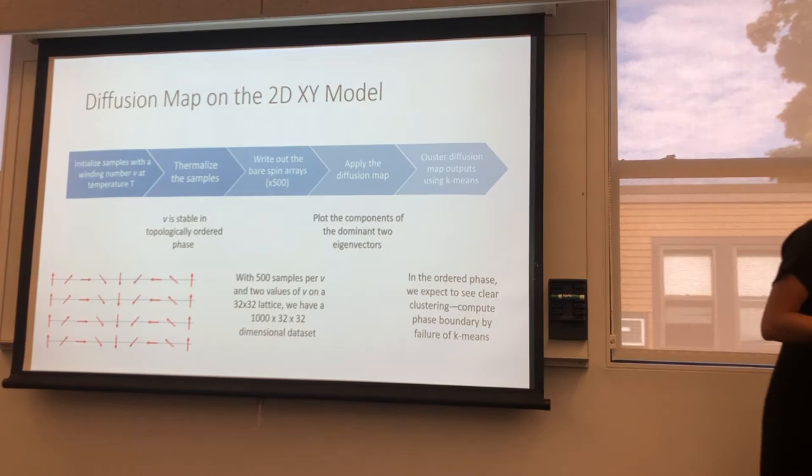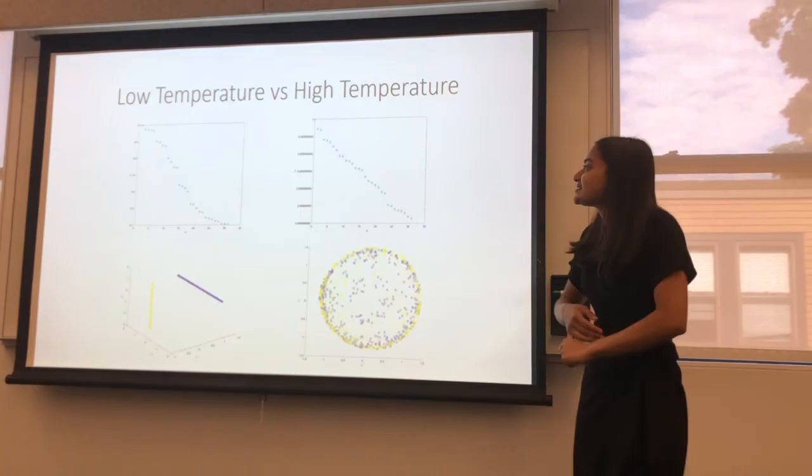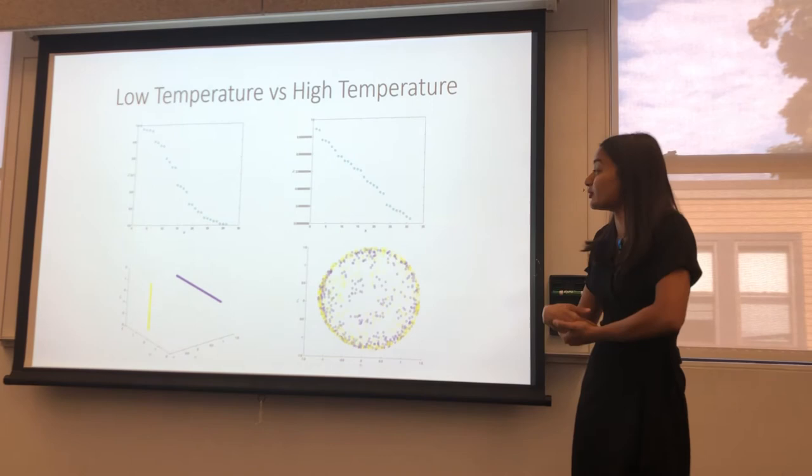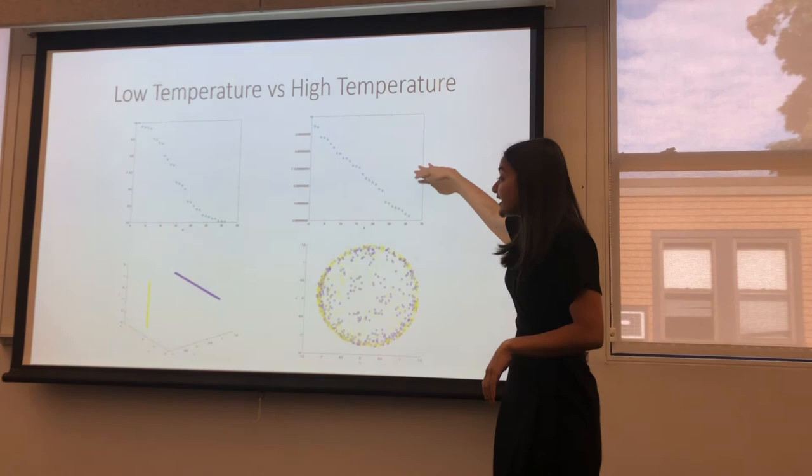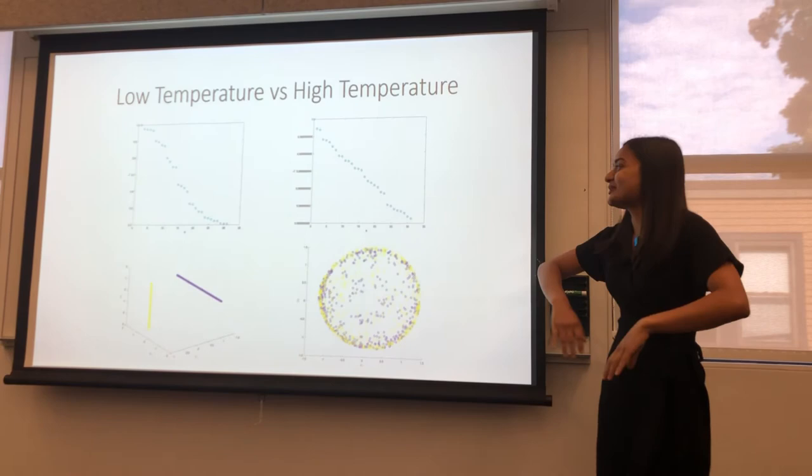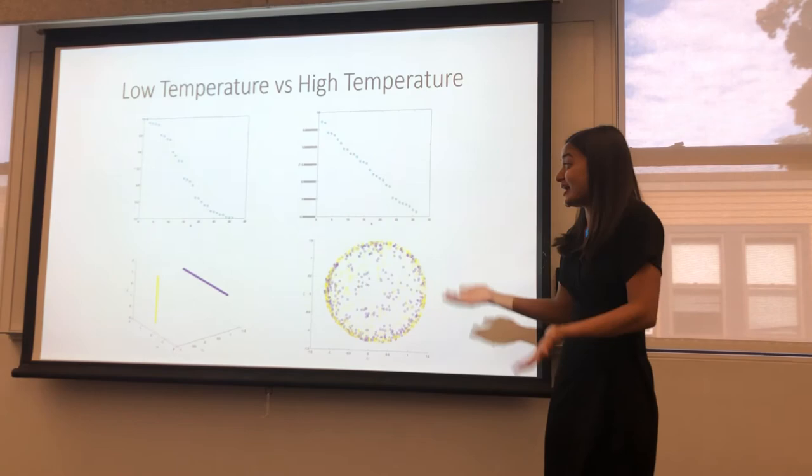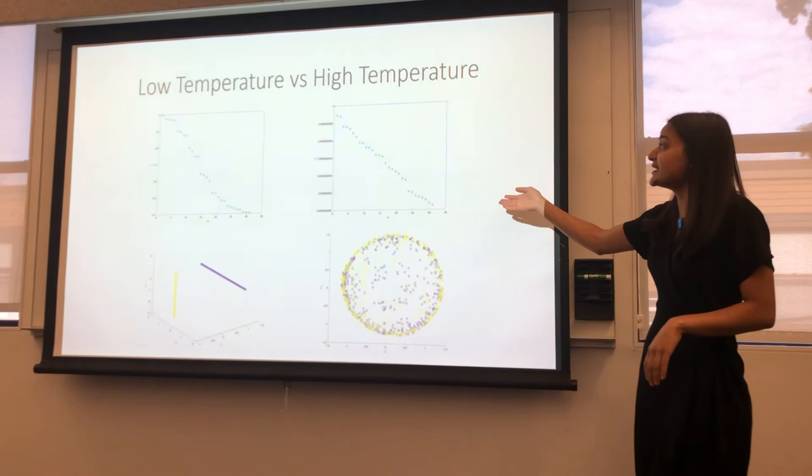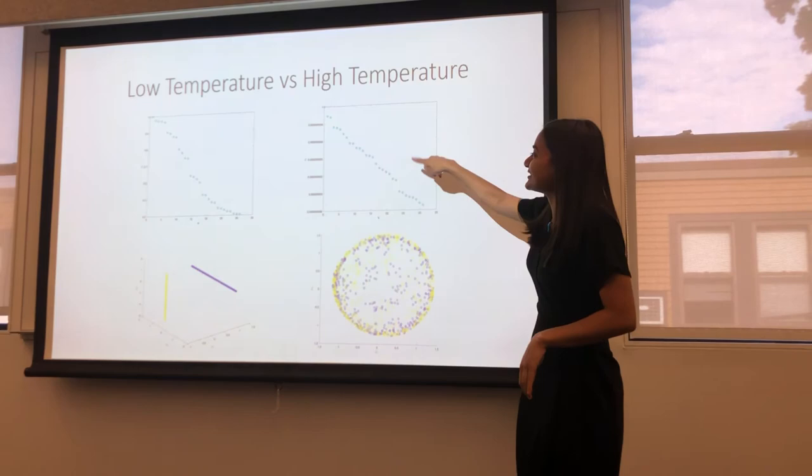Okay, so what does this actually look like? This is what the diffusion map will output in the case of the 2DXY model at both low and high temperature. So these are the eigenvalues and these are the eigenvectors. Yellow shows one winding number and purple shows a different winding number. And so you can see at low temperature, you get beautiful clustering. No samples are incorrectly classified. And you also get this wonderful structure in the eigenvalues. In the case of high temperature, notice that the scale on this plot is very different from that one. So if you plotted these on that plot, it would just look like a straight line. So there's really no structure going on here. And so that's how you can do this kind of classification.